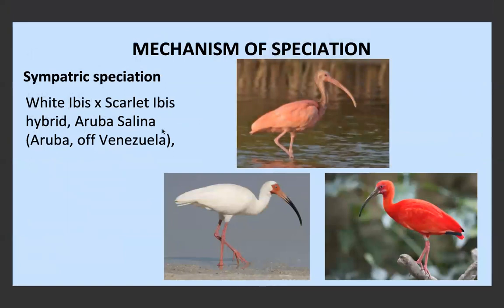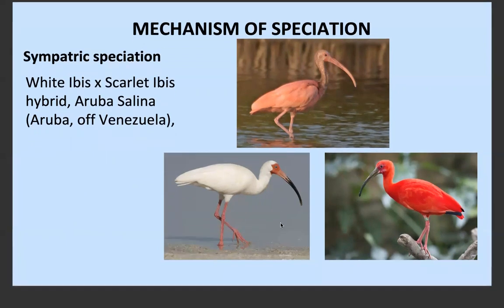Another example of this is the white ibis and scarlet ibis hybrid, which we call the Scarlet Ibis hybrid species. This is the hybrid species coming from the white ibis and the scarlet ibis, and these of course are not part of the same species.